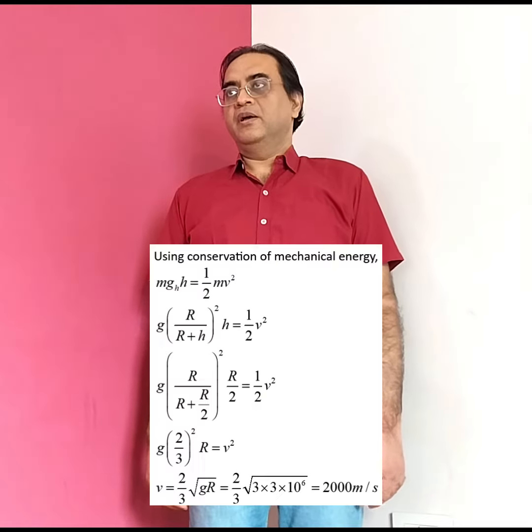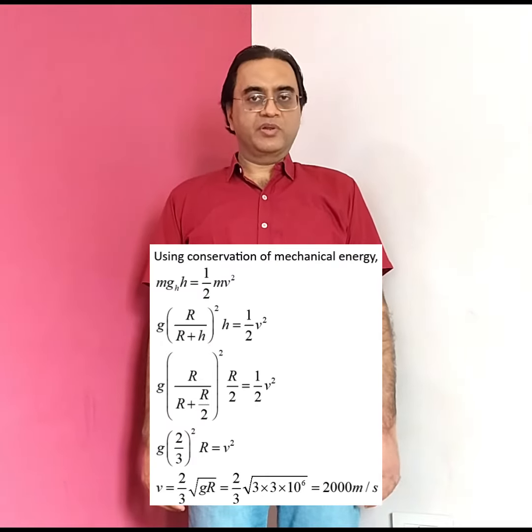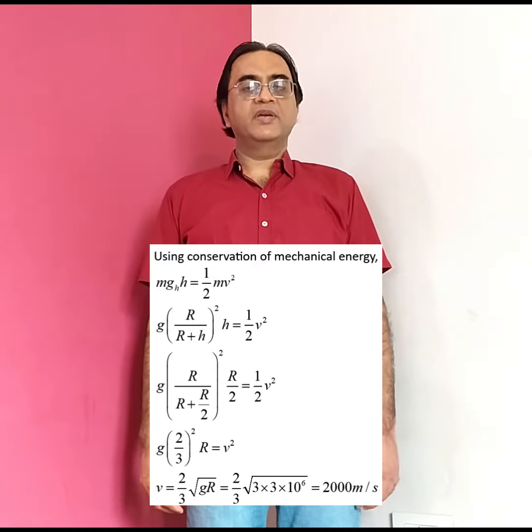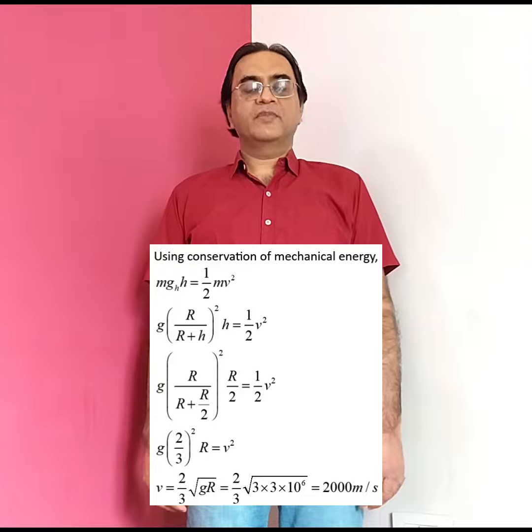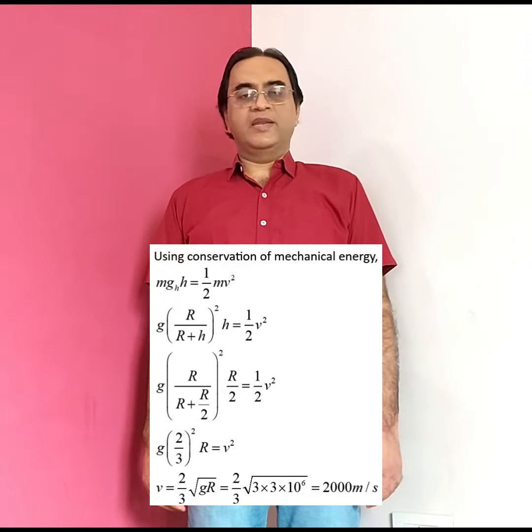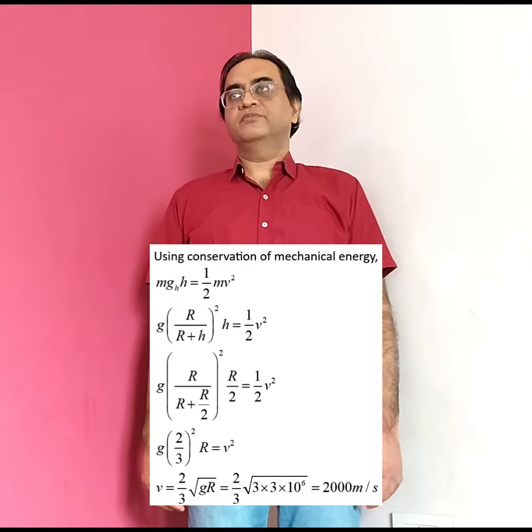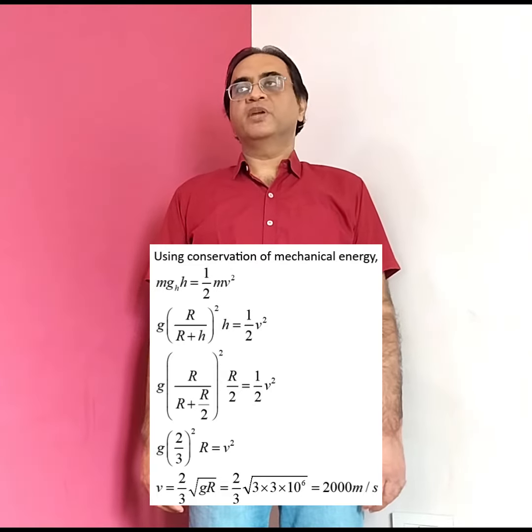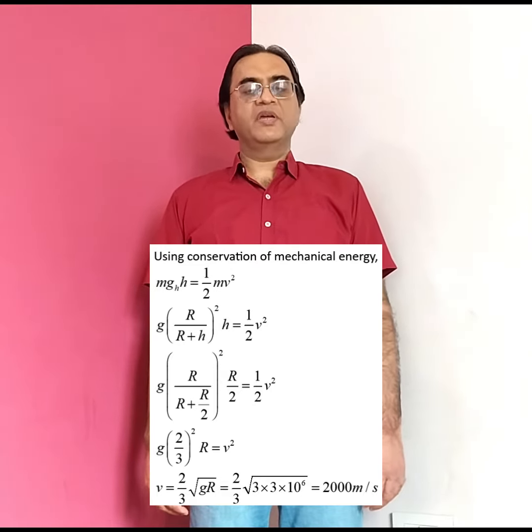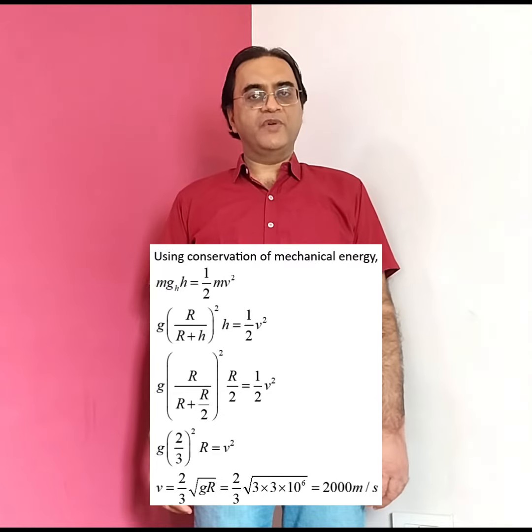If conservation of mechanical energy is used, then we have initial gravitational potential energy equal to final kinetic energy. That is, mgh at height h equals half mv squared.